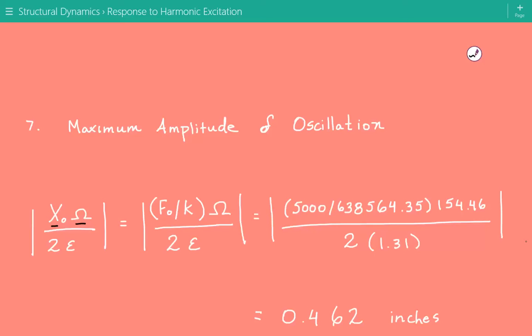So this XO is equal to the amplitude of the steady state force, or the amplitude of the harmonic force, divided by the stiffness. And then we have the excitation frequency divided by 2 times epsilon.